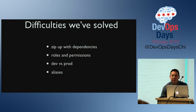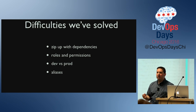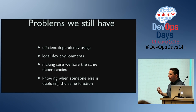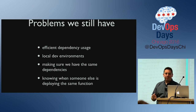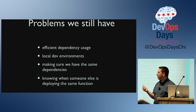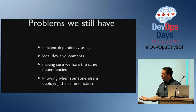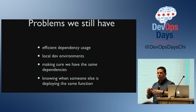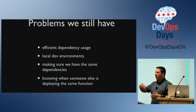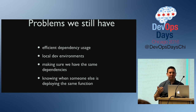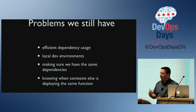Using Kappa, some of the difficulties we've solved are zipping everything up, deploying, and creating the roles — but we still have other problems. Efficient dependency usage is one — local dev environments is another big problem, and there's really no good solution for local dev yet. We had problems where one developer wouldn't run their library update, deploy a function with an earlier library version, and all of a sudden some code I wrote stopped working. It's because somebody deployed a lower version library, so that's another thing to watch out for.